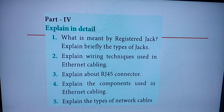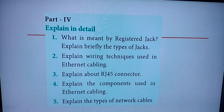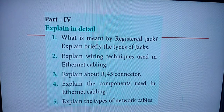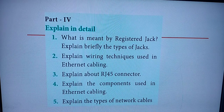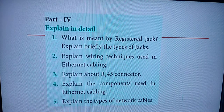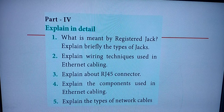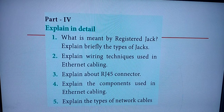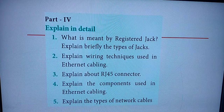Fourth question: explain the components used in Ethernet cabling. That is section 13.3 full. Start from page 189, third paragraph — 'Ethernet cabling is the process of connecting...' Then write about patch cable, RJ45 connector, Ethernet card and port, and the crimping tool with its seven process points. That is Roman numeral IV, fourth question.